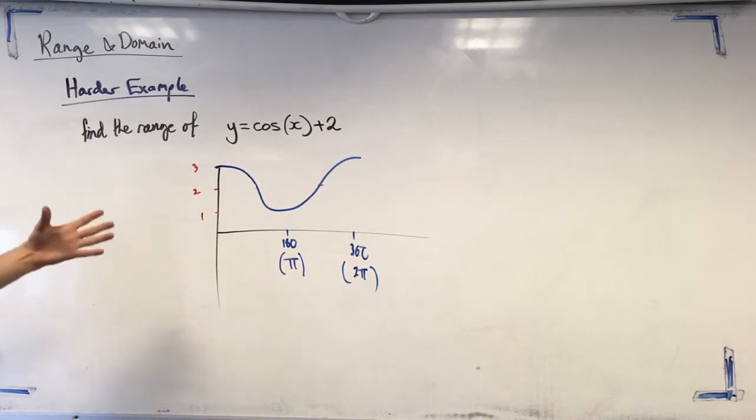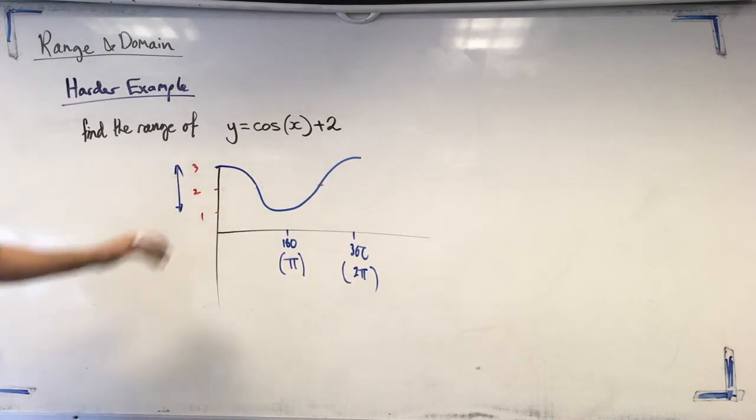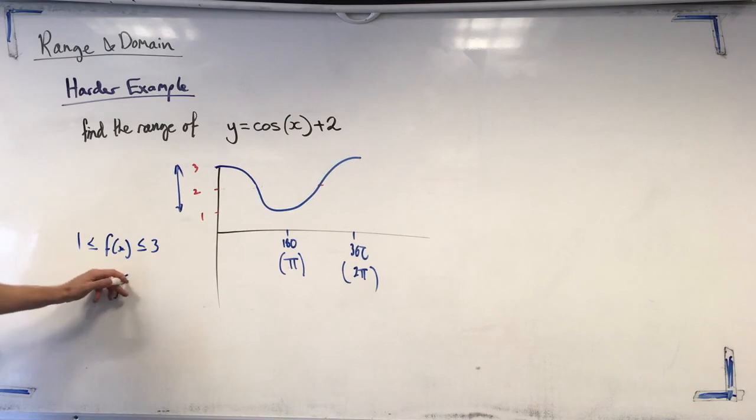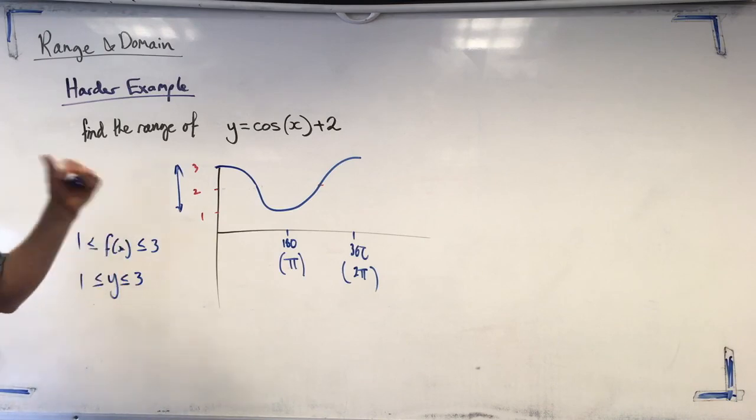So, our range of this is going to be between 1 and 3. So, straight away, we can say that f of x less than or equal to 3, because it can equal it, greater than or equal to 1. Or we could say y less than 3, greater than or equal to 1. Wasn't that hard, was it?